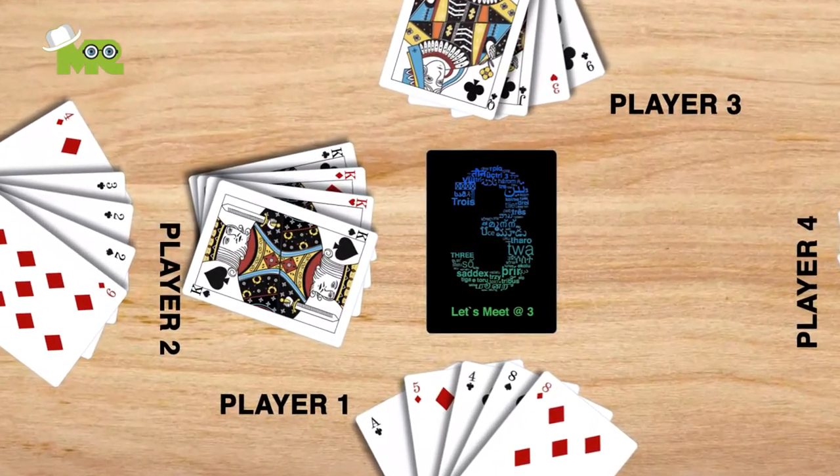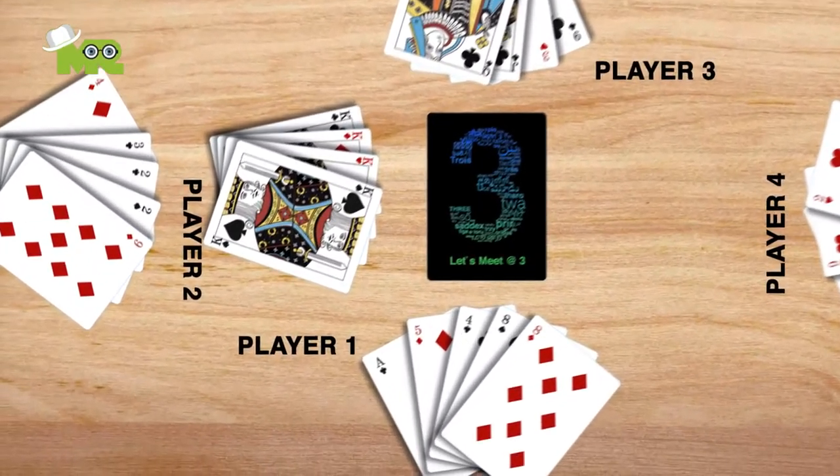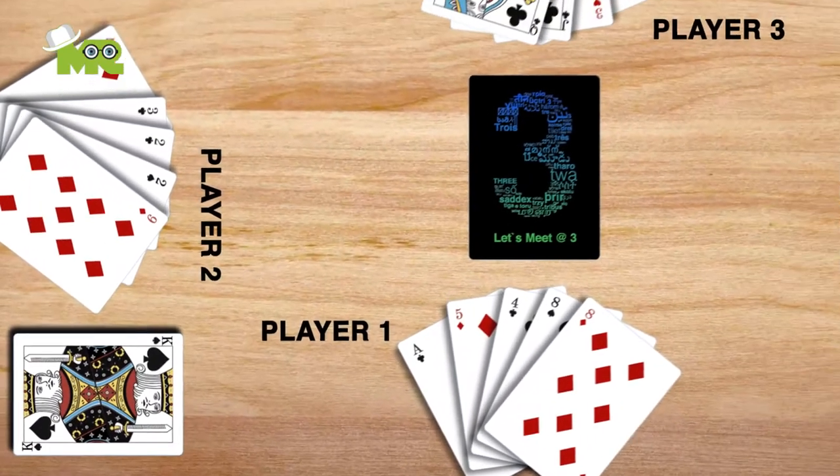The player is supposed to show all four cards when they get the fourth card of a book. The player places them on the table face up in front of everyone and plays again.